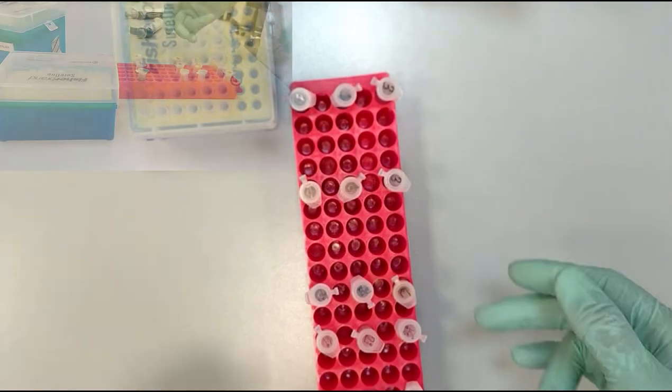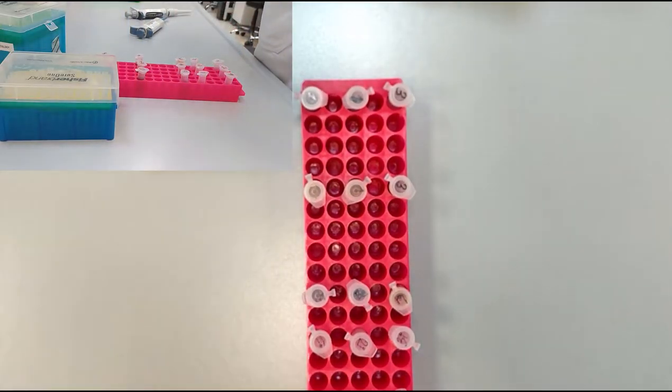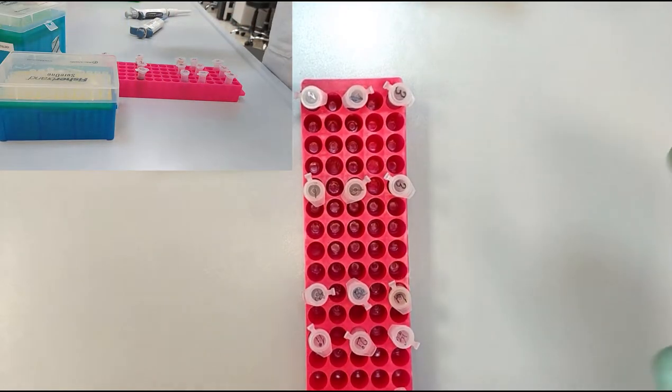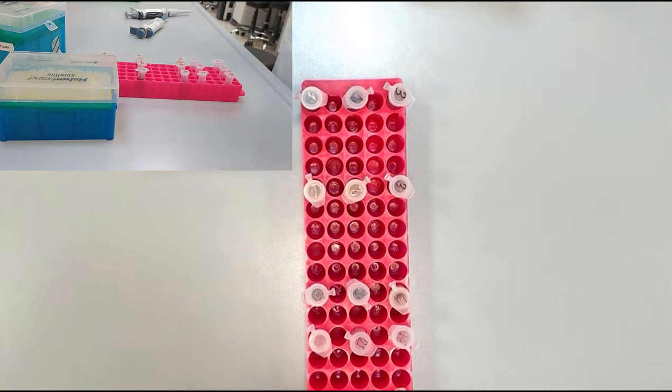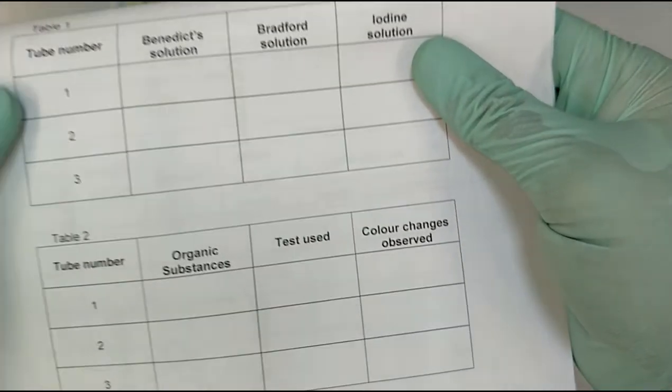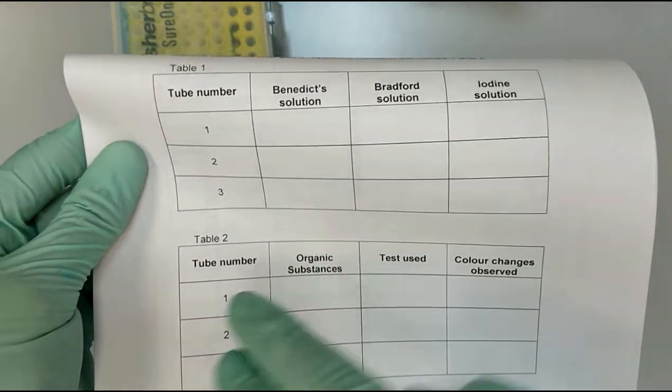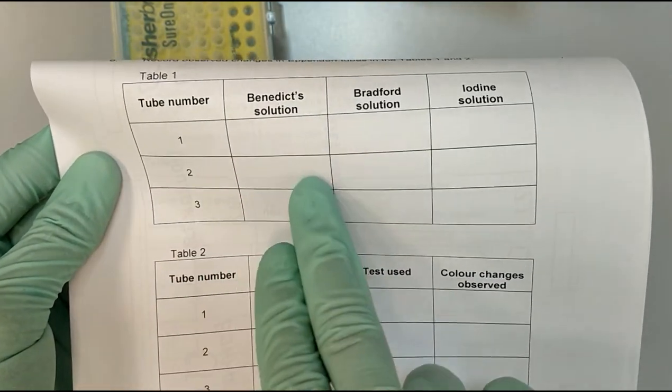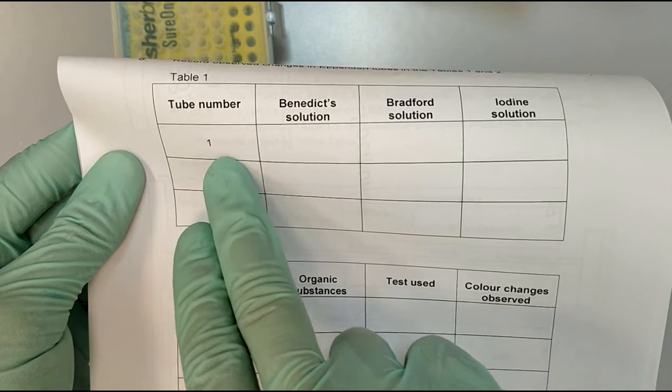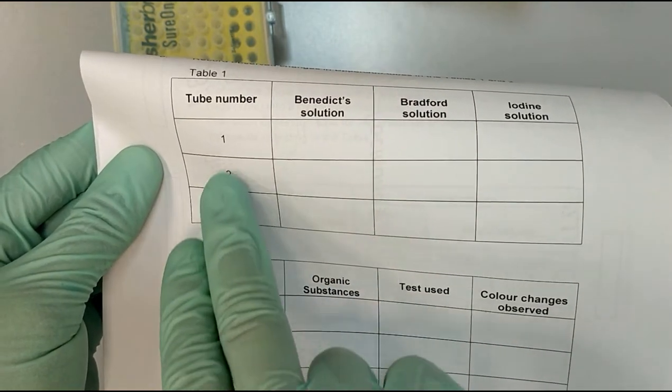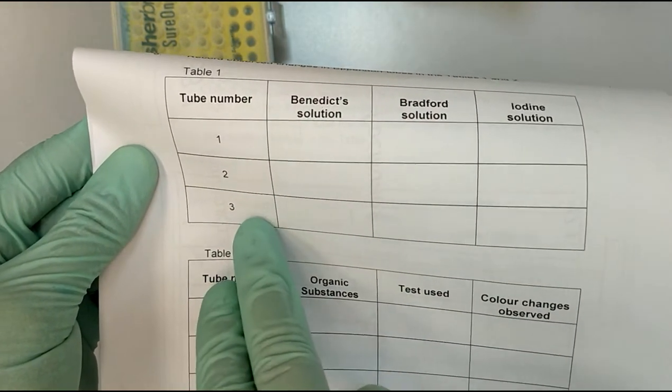Now what we are going to do, we are going to write down the results. For the results we have a special table in your manuals. For example, for table 1 you are going to write down the tube number as 1, 2, 3, so these are the secret solutions.